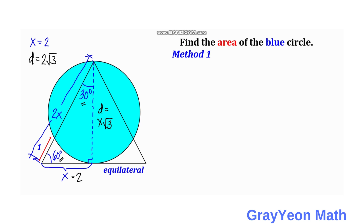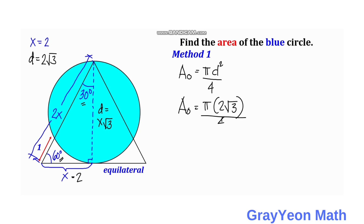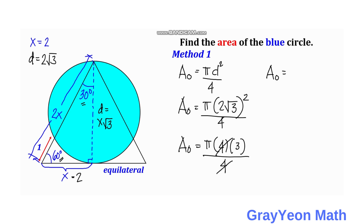From this, it will now be easy to find the area of the circle. Area of the circle is equal to π times d squared over 4. Since d is equal to 2√3, we have area equals π times (2√3) squared over 4. That is π times 4 times 3, which is 12, over 4. Canceling 4, the area of the circle is 3π square units.